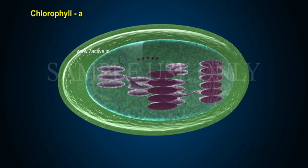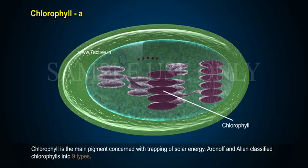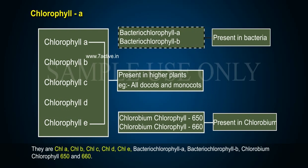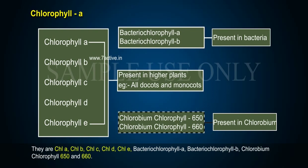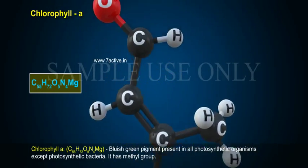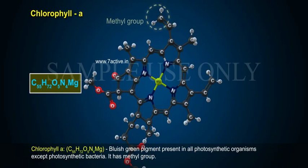Chlorophyll is the main pigment concerned with trapping of solar energy. Aronoff and Allen classified chlorophylls into nine types: Chlorophyll A, B, C, D, E, and others. Chlorophyll A has the formula C55H72O5N4Mg. It is a bluish-green pigment present in all photosynthetic organisms except photosynthetic bacteria. It has a methyl group.